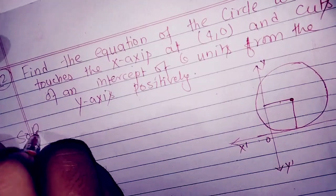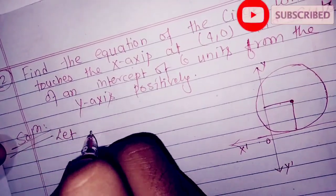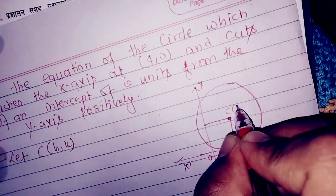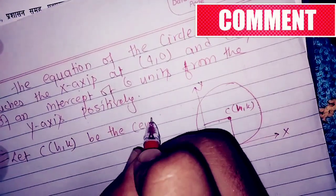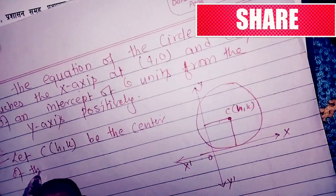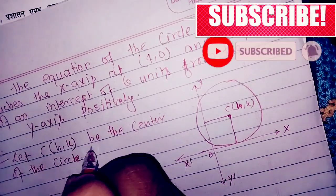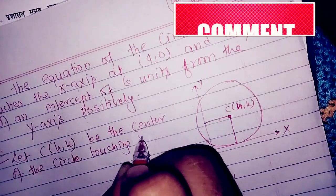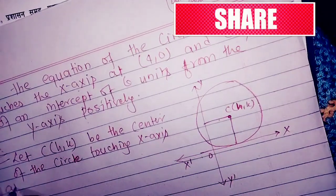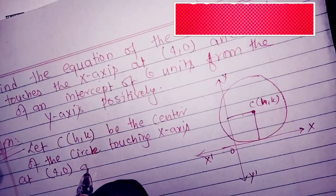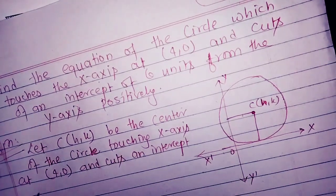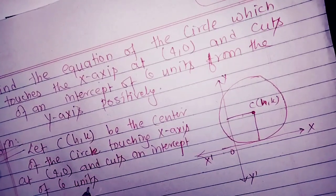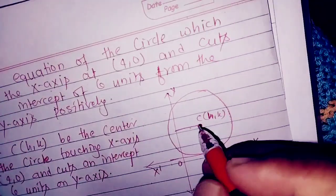Find the equation of a circle which touches the x-axis at (4, 0) and cuts a y-intercept of 6 units. The circle touches the x-axis at (4, 0) and cuts an intercept of 6 units on the y-axis. Let C be the center of the circle.